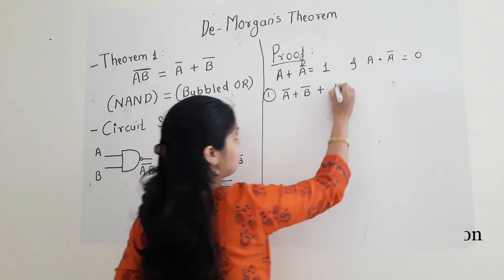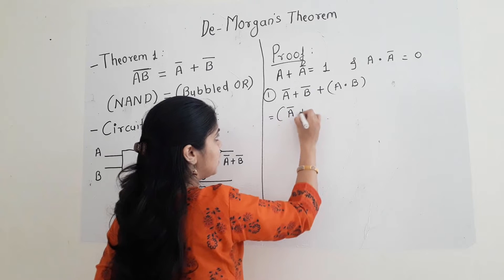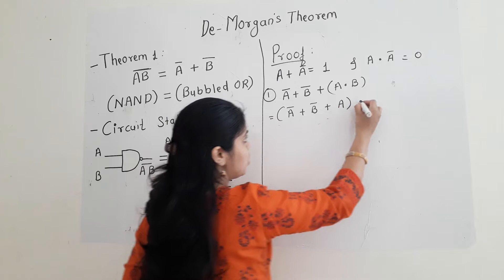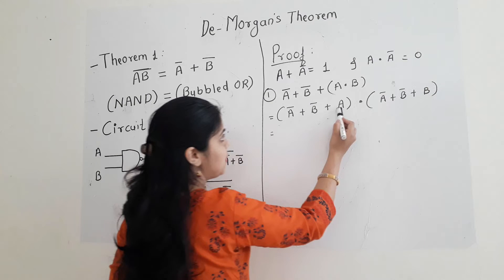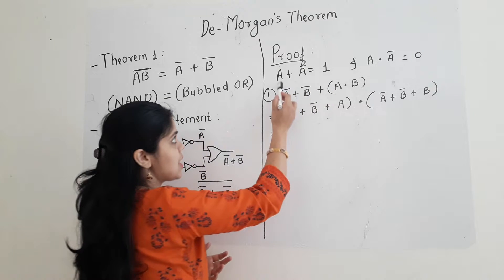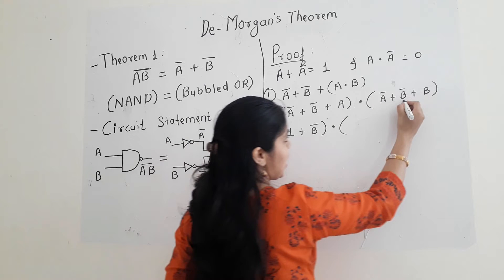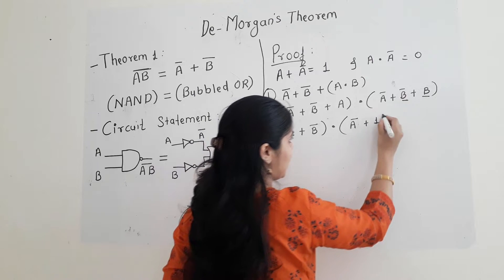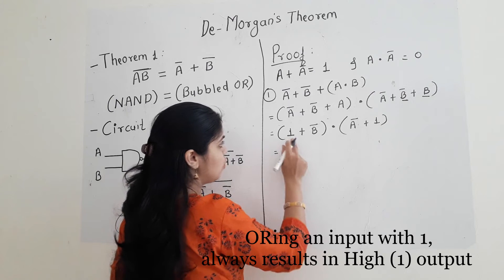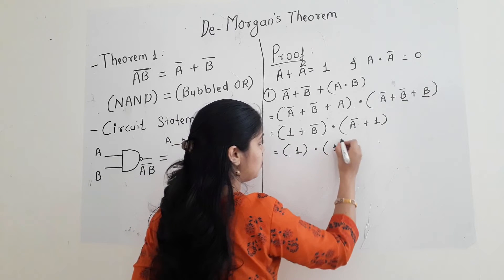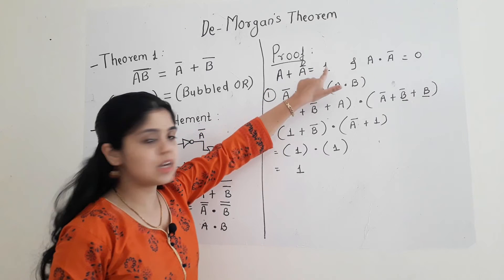I am replacing it here as A dot B. Now, by using the distributive law, I am opening the brackets: A bar plus B bar plus A, into A bar plus B bar plus B. As you can see, A bar plus A — as per the law A plus A bar gives me 1 — so this gives me 1 plus B bar, into the second one where B bar and B gives me A bar plus 1. Any variable added with 1 gives 1 only, so 1 plus B bar gives 1 and A bar plus 1 gives 1. So my output is 1, and A plus A bar equal to 1 has been proved.